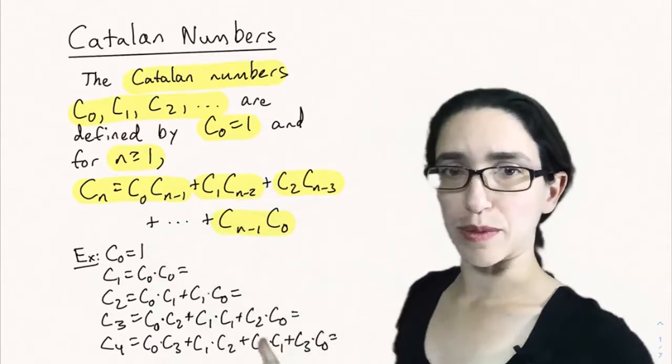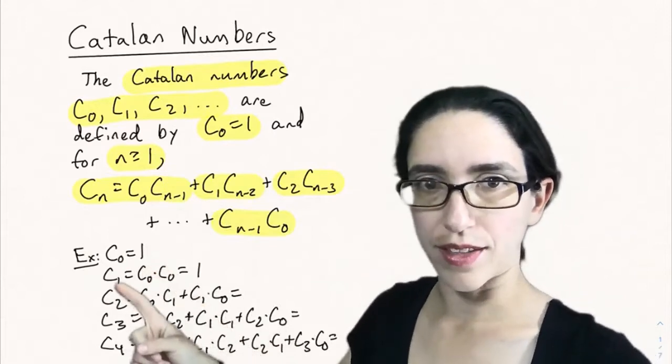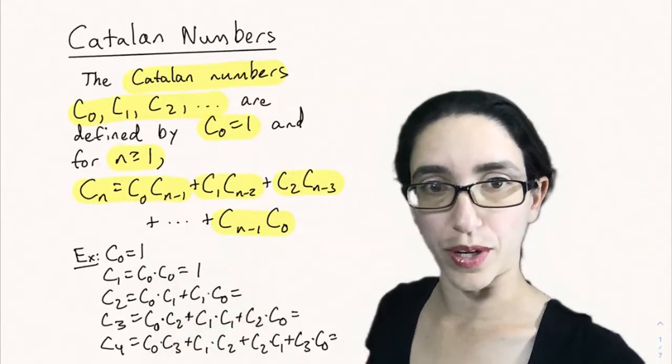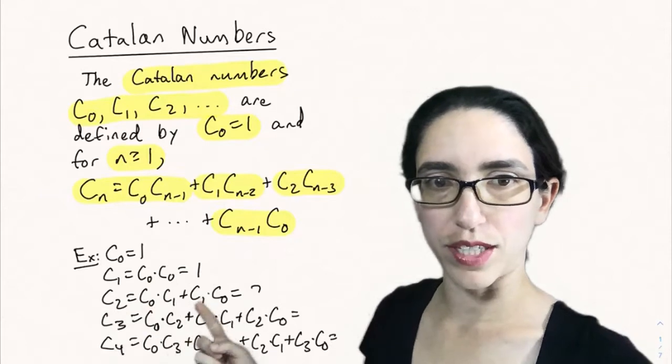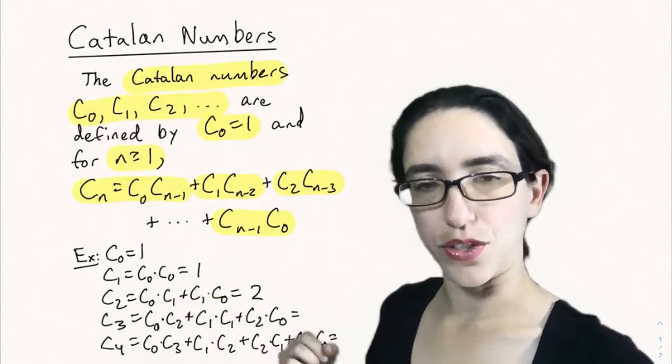Let's write out some examples to see how this recursion works. We start at C0 equals 1. Then C1 is just C0 times C0, which is 1. But then C2 is C0C1 plus C1C0, which is 1 times 1 plus 1 times 1, which is 2.